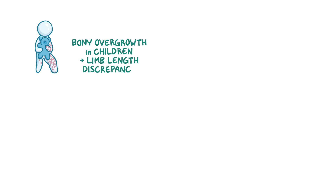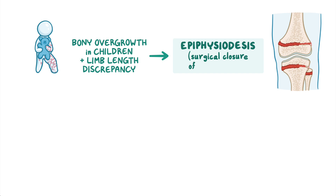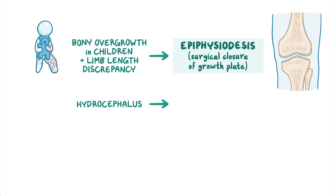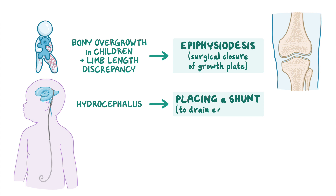Bony overgrowth in children, which results in limb length discrepancy, can be treated with epiphysiodesis, or surgical closure of the growth plate. Hydrocephalus may be treated by placing a shunt to drain excess cerebrospinal fluid.